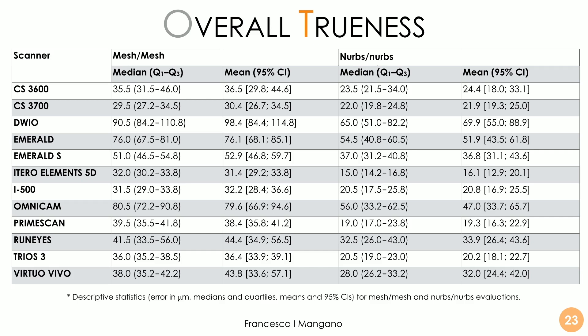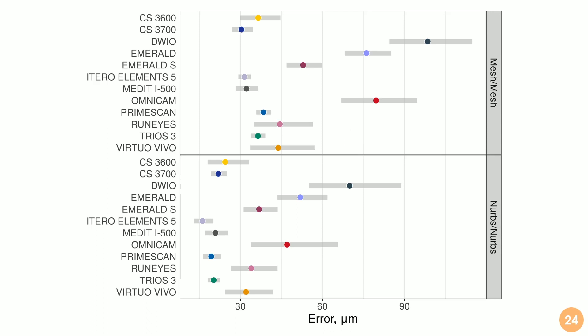In this table we can see the overall trueness, and there was evidence of statistically significant differences. Some machines like the CS3700 and the iTero Elements 5D performed particularly well. A group of scanners proved very true and very accurate: the iTero Elements 5D, PrimeScan, Trios 3, CS3600, and CS3700 — they are very accurate. There were some deviations between the mesh-to-mesh and NURBS-to-NURBS evaluations, but overall these five to six scanners work very well in terms of trueness, with deviations in the range of 25–30 microns for the iTero Elements 5D, the Carestream scanners, and the Medit scanner.